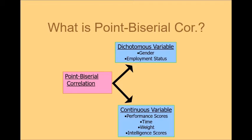For instance, gender or employment status. You know that in gender there are two categories only: one, male and two, female. Employment status, you know that one, employed, two, unemployed. So these are the dichotomous variables.